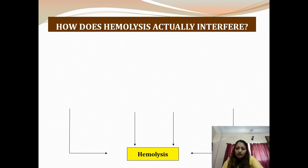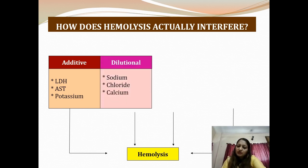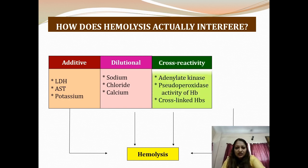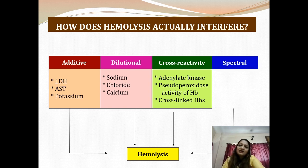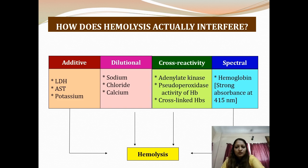How does hemolysis actually interfere? By additive nature: it adds to the signal for LDH, AST, and potassium since RBCs themselves contain these analytes, leading to false high values. Dilutional effect for sodium, chloride, and calcium leads to falsely low values. Cross-reactivity occurs with adenylate kinase, pseudoperoxidase activity of hemoglobin, and cross-linked hemoglobin. Spectral interference occurs because hemoglobin has a strong absorbance at 415 nanometers, so all analytes measured at 415 nm undergo interference.